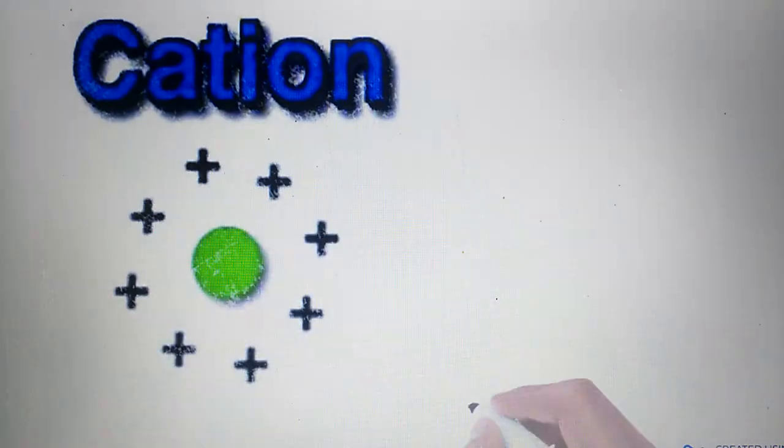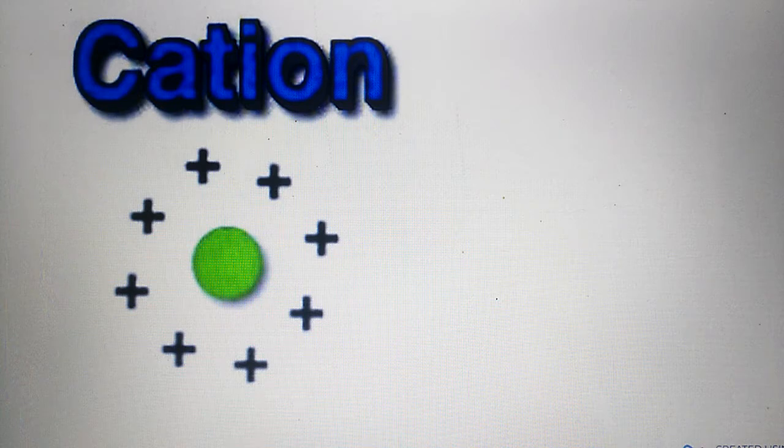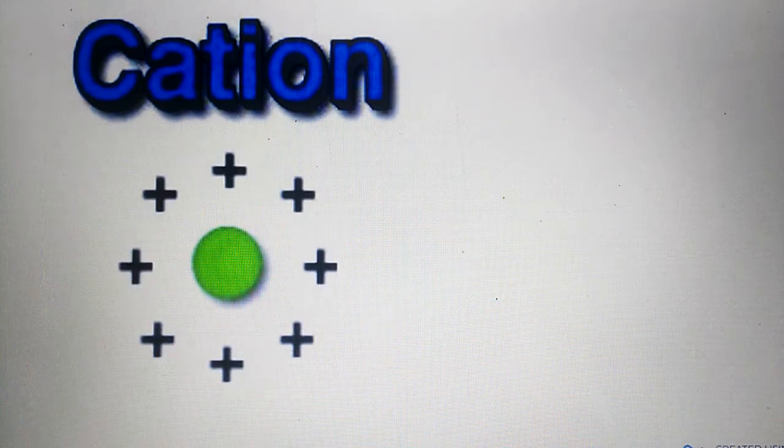An ion may be a cation or anion. When an atom loses an electron, a positive charge comes on the atom, and it is said to be a cation.